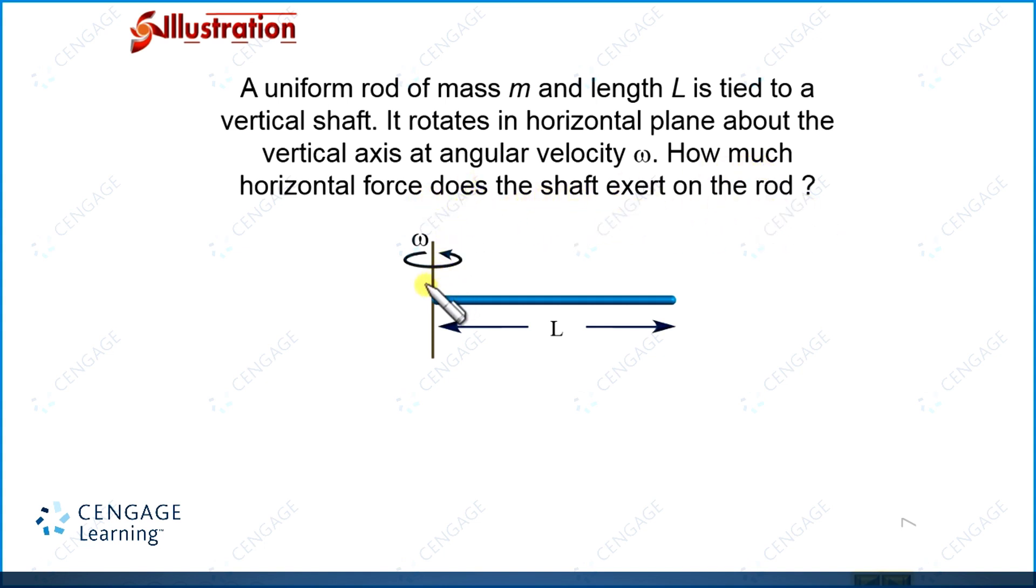We need to calculate the force exerted by the shaft, this vertical shaft on the rod. Here we are considering gravity-free space. That's why this rod is rotating in the horizontal plane without inclination. We are considering the space is gravity-free. Let us make the diagram to the next space.